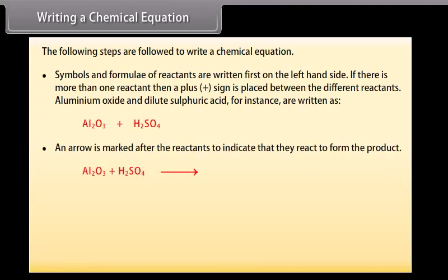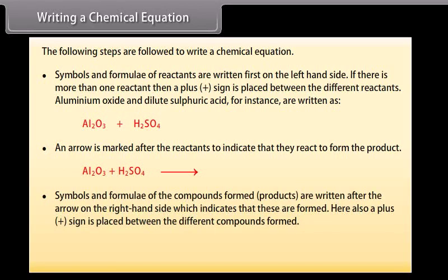An arrow is marked after the reactants to indicate that they react to form the product. Symbols and formulae of the compounds formed, products, are written after the arrow on the right-hand side, which indicates that these are formed. A plus sign is placed between the different compounds formed. For example, Al2O3 plus 3H2SO4 gives Al2(SO4)3 plus 3H2O.